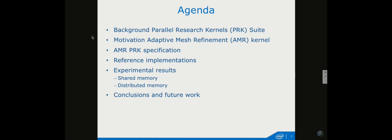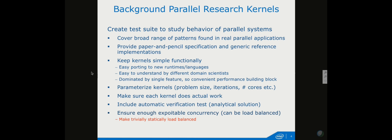The topic of today is Adaptive Mesh Refinement — it's a new kernel, part of the Parallel Research Kernel suite. I'll explain why we are focusing on it, give you a specification of that kernel, briefly show the reference implementations we created, then the most important part: experimental results running in shared memory and distributed memory environments, and future work.